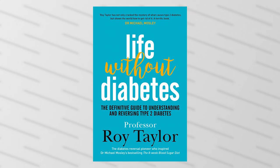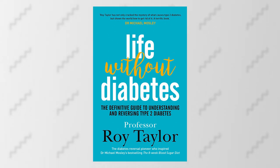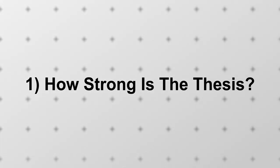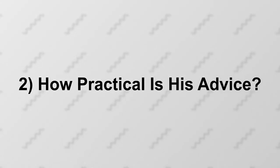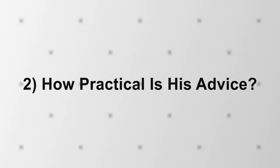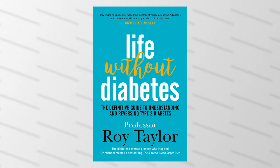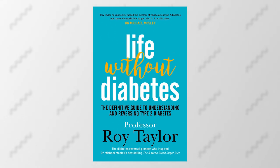So that is the overview of Life Without Diabetes. Now what did I think of it? I'm going to create my rankings using three main metrics. Number one, how strong is the thesis? For this, we'll look at his theories and what data he presents to back up his claims. Number two, how practical is his advice — is this something most anyone can easily try and follow without harming their bodies? And number three, how well is this written — is the book entertaining, did it keep me turning the pages, and was it easy to understand? We'll grade each section from one to ten, with ten being the best score, then average the scores for an overall ranking.